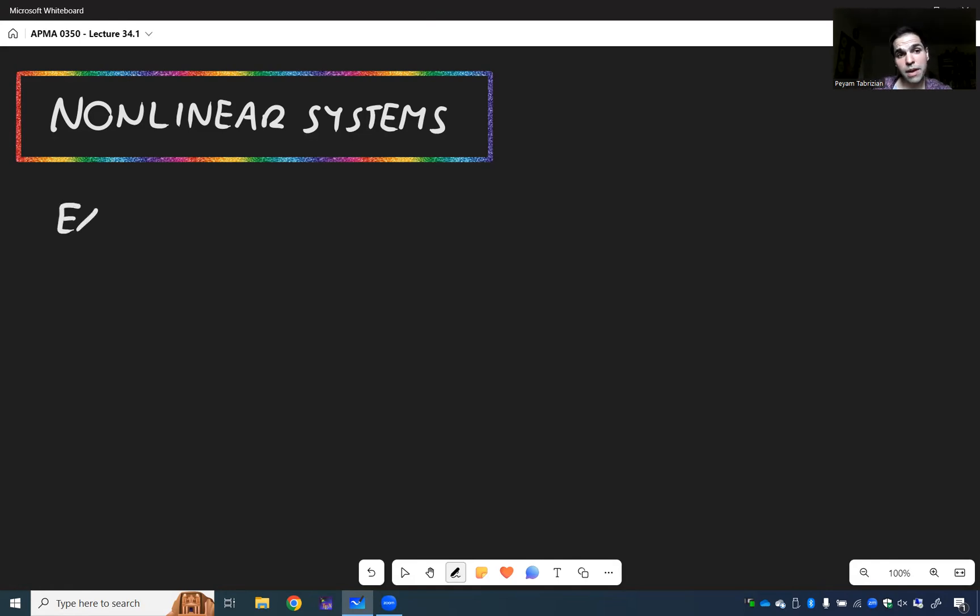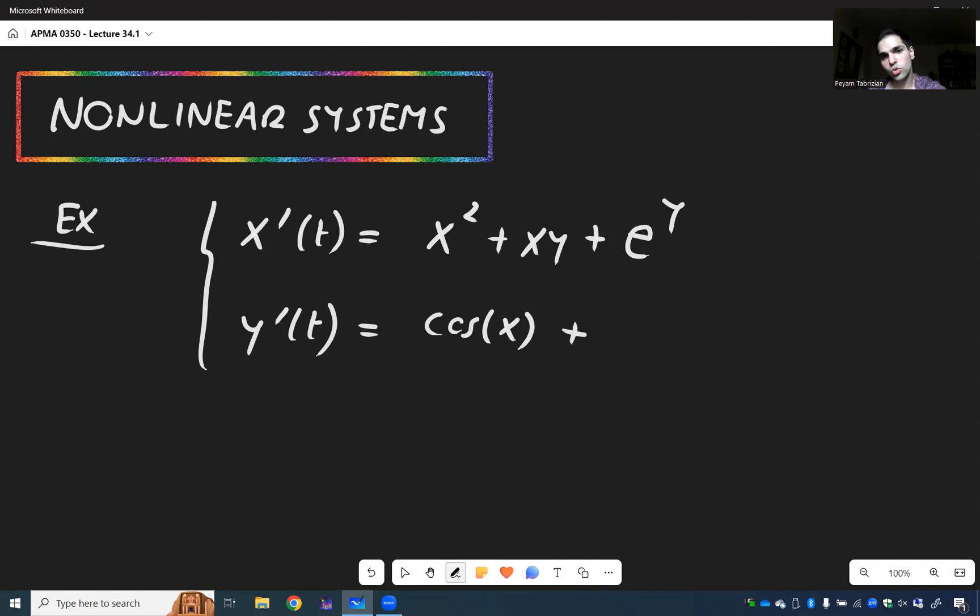And so for instance, an example of a nonlinear system would be something like x prime of t equals x squared plus xy plus e to the y. So you see we have the square term and also x and y are combined and e to the y. And also y prime of t equals cosine x plus 2y.